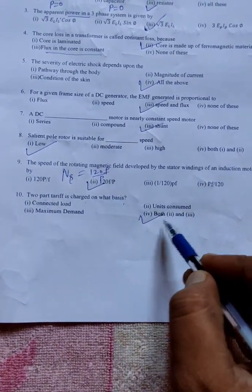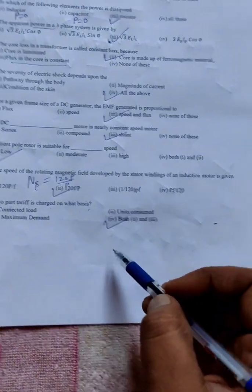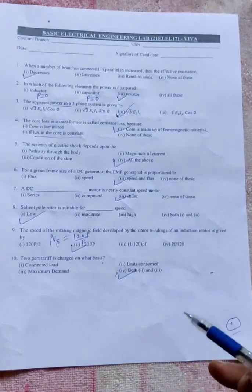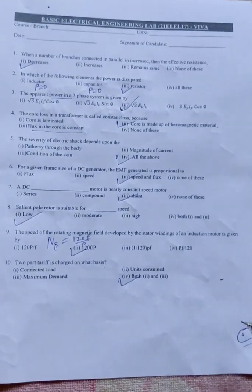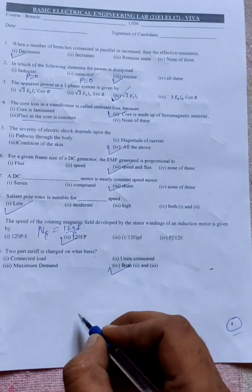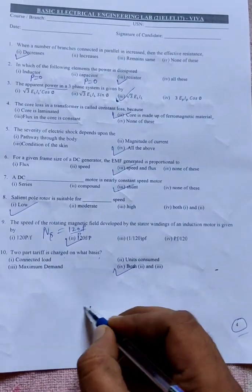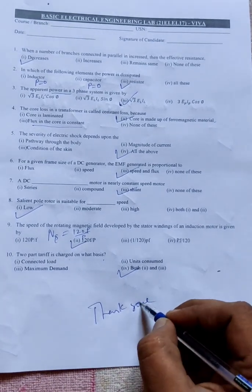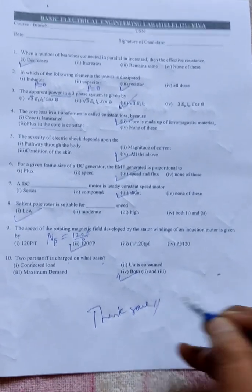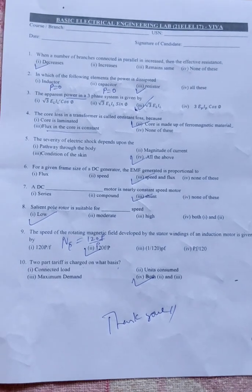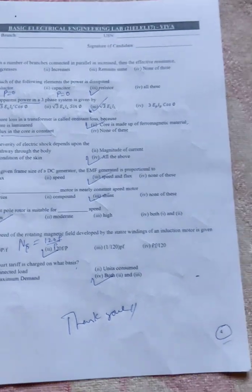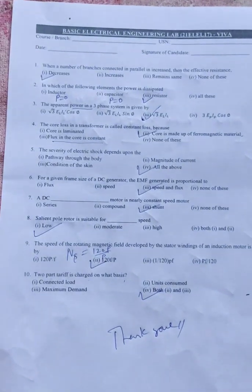Two part tariff is charged on what basis? Last option. Because it is repeated from set three, so I completed set four option. Totally there are six sets. In next video I am going to provide solutions for set number five. Thank you so much for watching the video. Please give like, share this video, and comment if it is useful. Please comment. Meet you in next video, set number five.